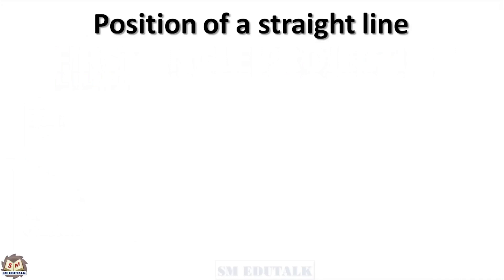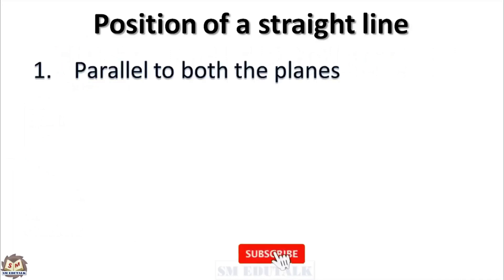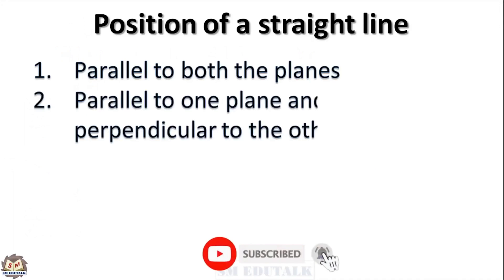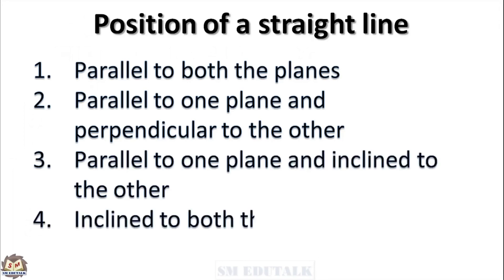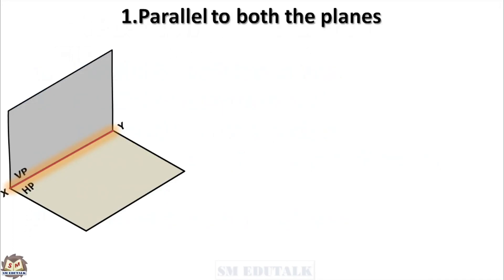We can position the given straight line in four different ways: parallel to both the planes; parallel to one plane and perpendicular to the other; parallel to one plane and inclined to the other; and inclined to both the planes. Among the four positions, you will have questions only from the fourth position, but to understand the fourth position you have to go through the other three. Now we are going to see them one by one in detail.